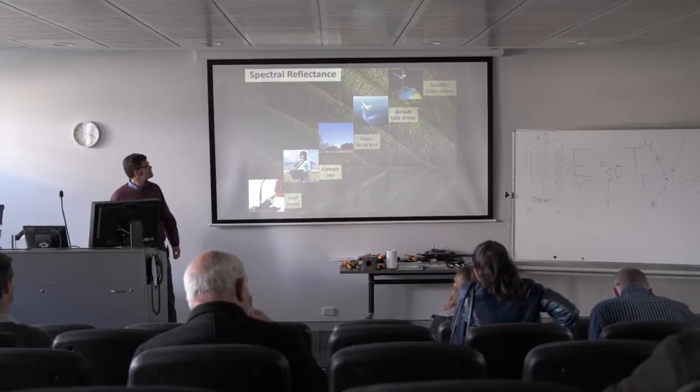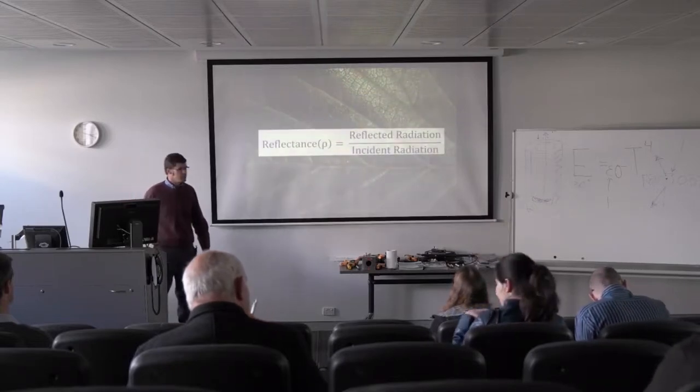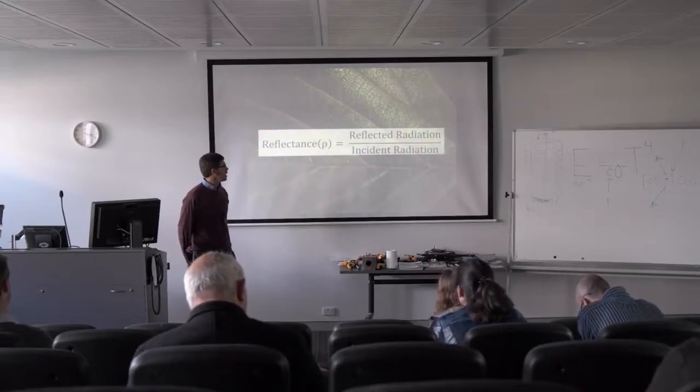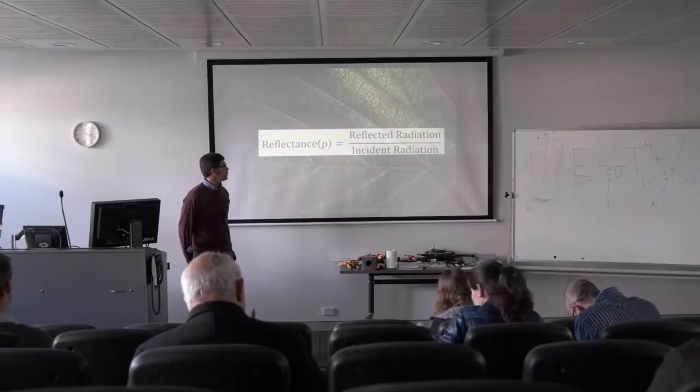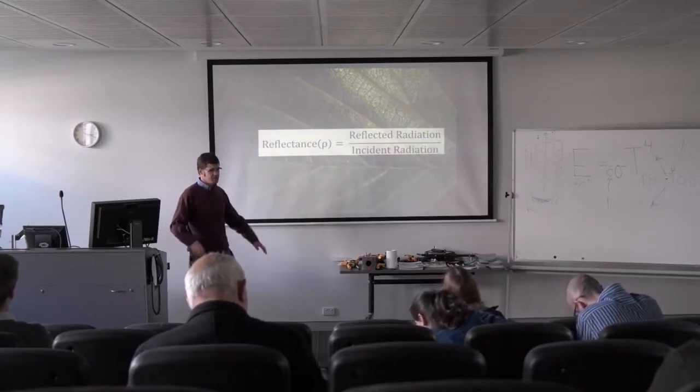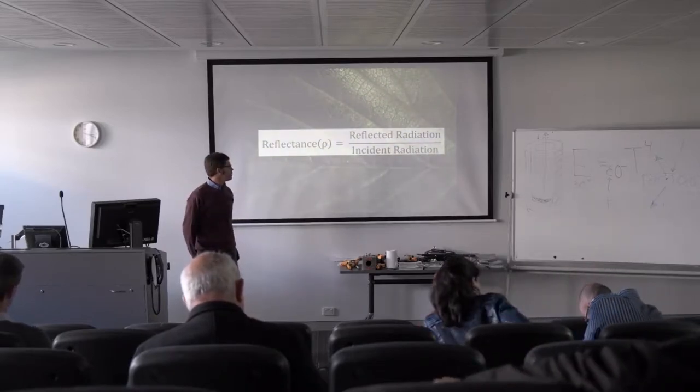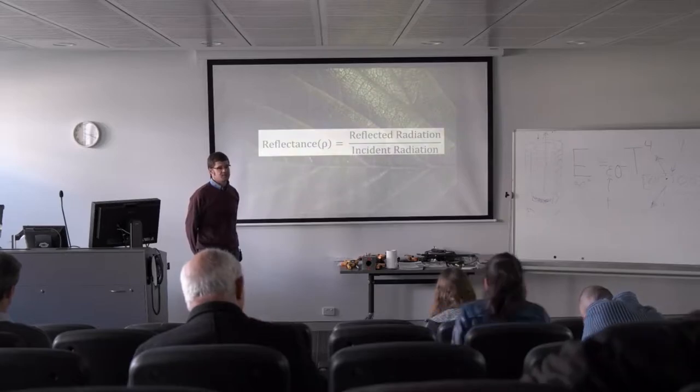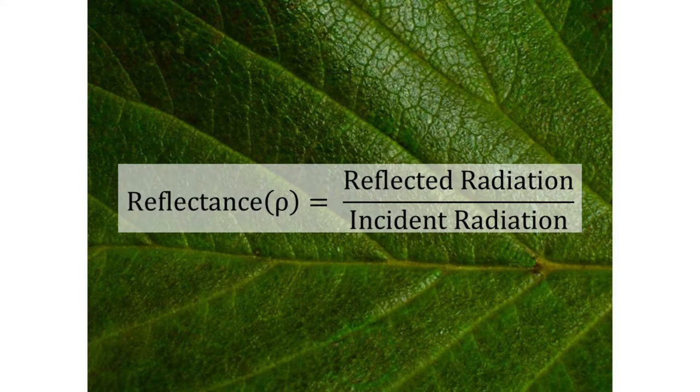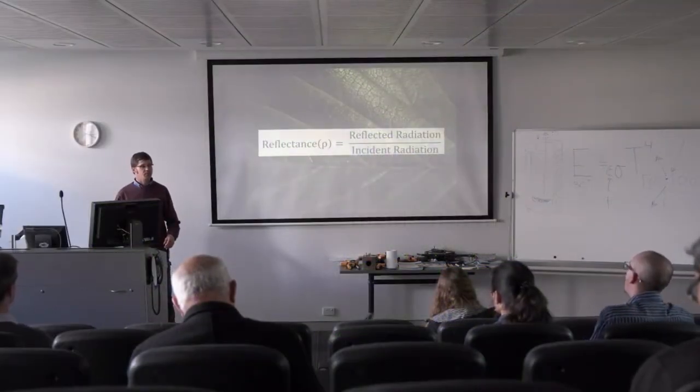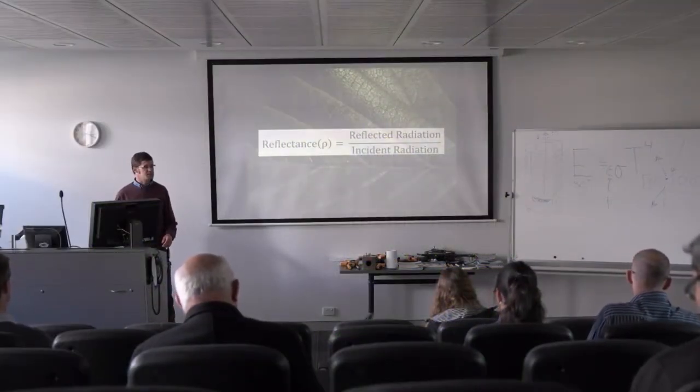Reflectance is a pretty simple concept. We just divide the reflected radiation, everything that's bouncing off the surface and coming back, by the radiation that's incident on the surface. It's simple but powerful because we can learn a lot about surface properties and surface conditions.